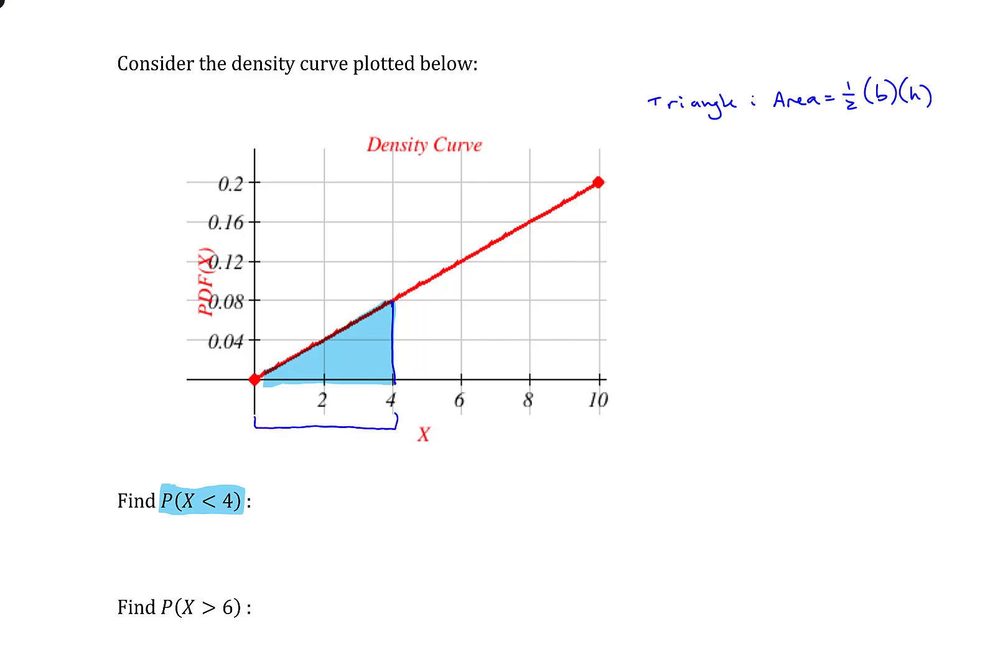So all we need to do is figure out what the base and the height of this triangle are. So the base is this distance here, which would be four minus zero, which is four. And then the height is going to be this distance here. And that height is going to be 0.08 minus zero, or I'll just say 0.08. So we have the base and the height.